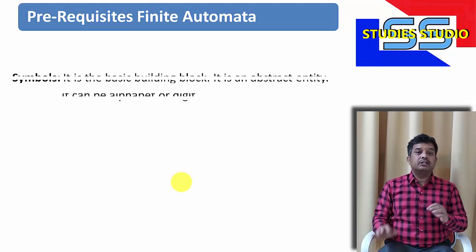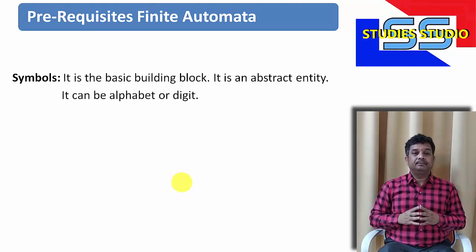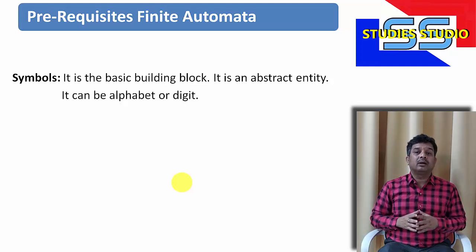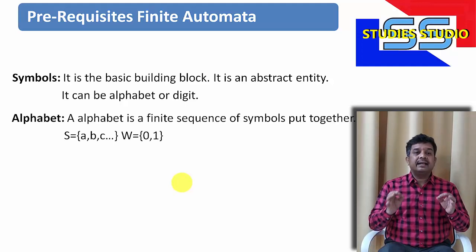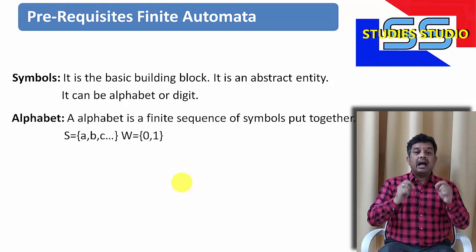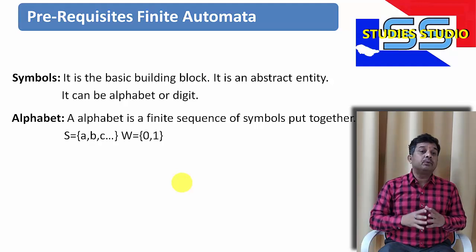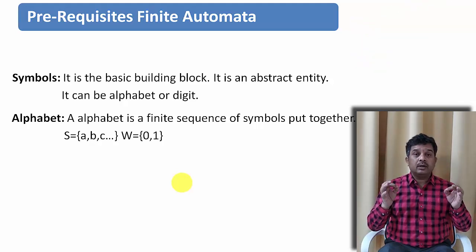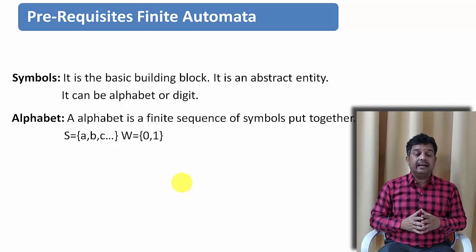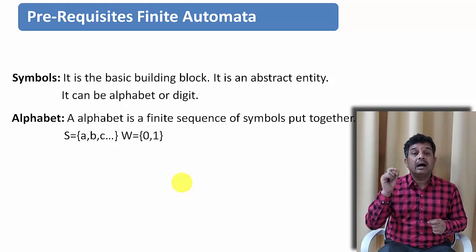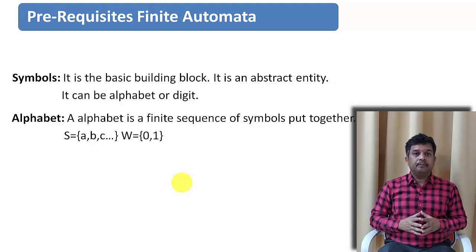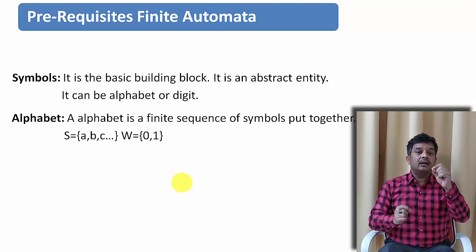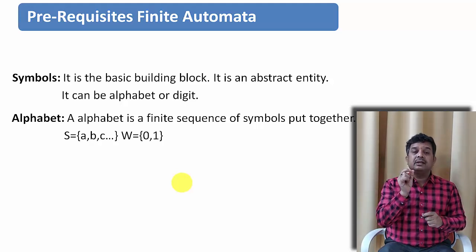The first thing that we must know is what is a symbol. A symbol is basically a building block — it is an abstract entity and it can be either an alphabet or a digit. The next thing is an alphabet. An alphabet is a finite collection of symbols. For example, to construct a word in English, the basic building blocks you need are small a to z or capital A to Z. So these are the alphabets.